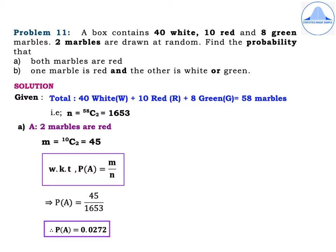Problem 11. A box contains 40 white, 10 red and 8 green marbles. 2 marbles are drawn at random. Find the probability that: first subdivision, both marbles are red; second subdivision, one marble is red and the other is white or green. In this question, I have highlighted some of the terms which are important.